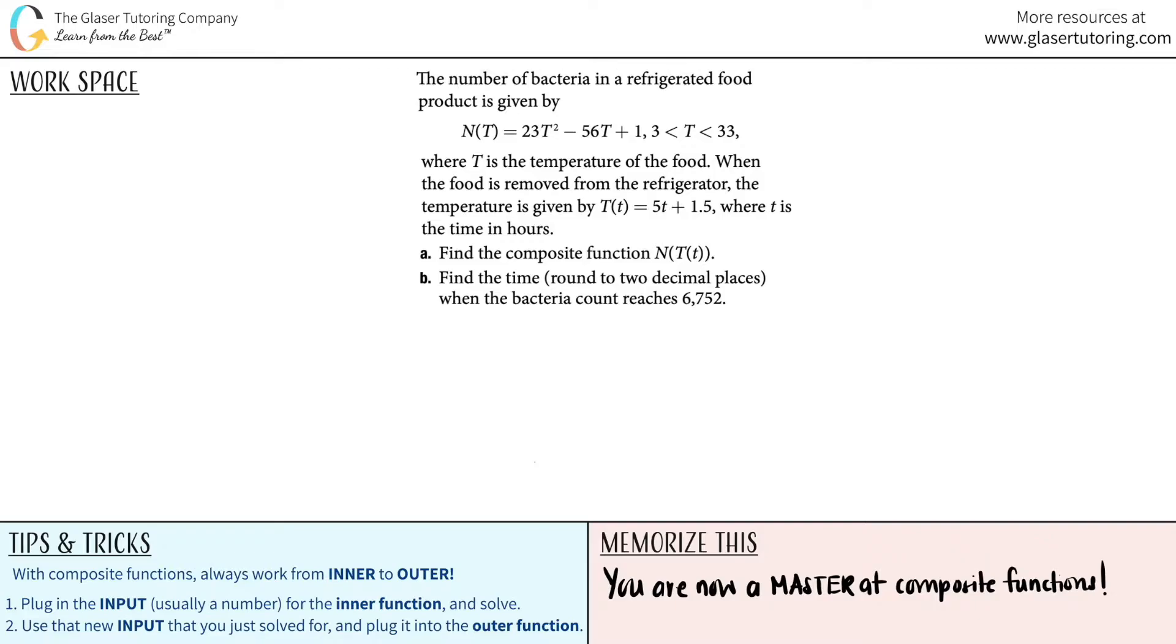The number of bacteria in a refrigerated food product is given by n(t) = 23t² - 56t + 1, where 3 < t < 33 and t is the temperature of the food. When the food is removed from the refrigerator, the temperature is given by capital T of lowercase t, which equals 5t + 1.5, where t is the time in hours.